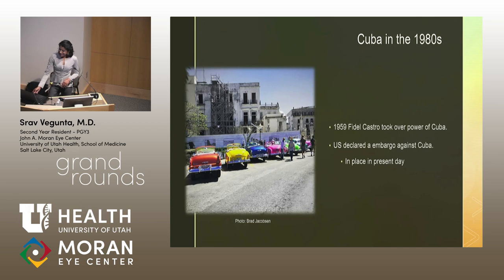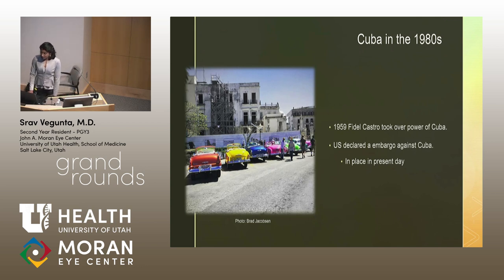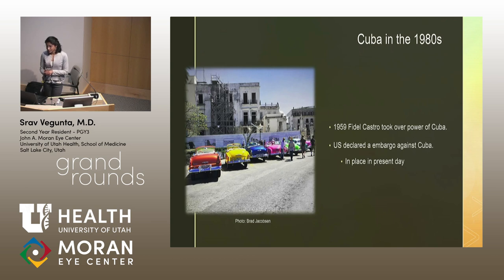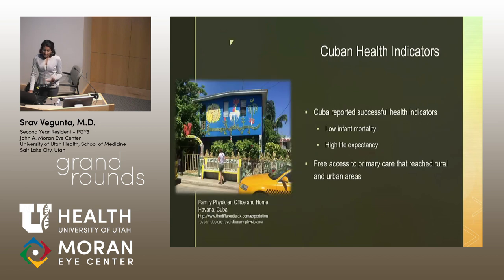Fidel Castro had been in power since 1959, and since his takeover the U.S. declared an embargo and sanctions to isolate Cuba politically and diplomatically from the rest of Latin America and the world. The U.S. declared this embargo on trade with socialist bloc countries as well as Cuba, and it's still in place until present day, although not as severe.